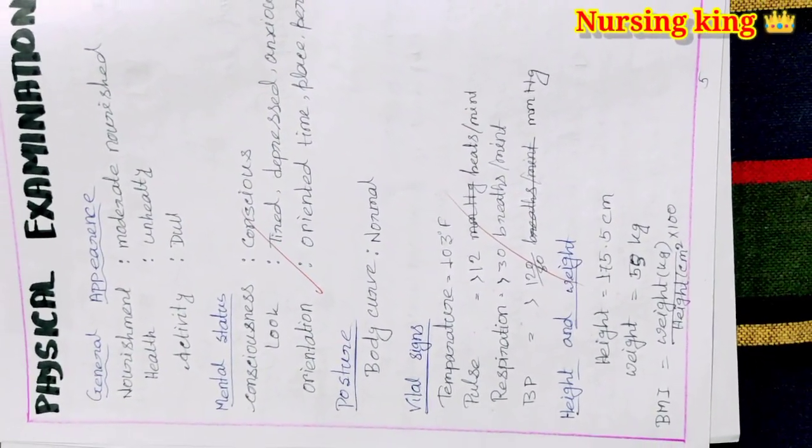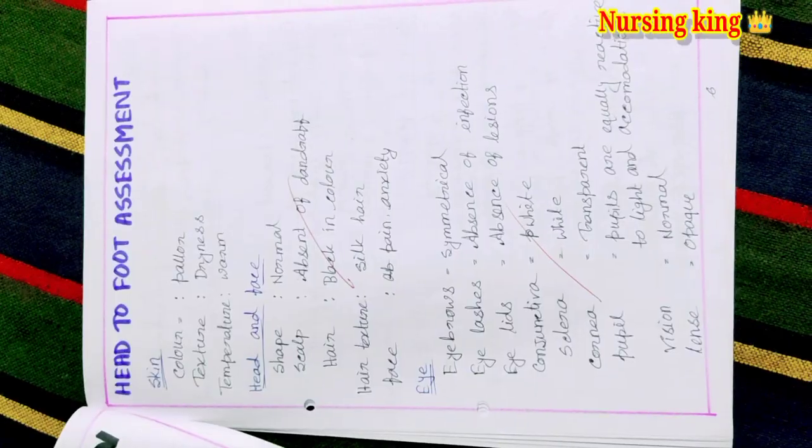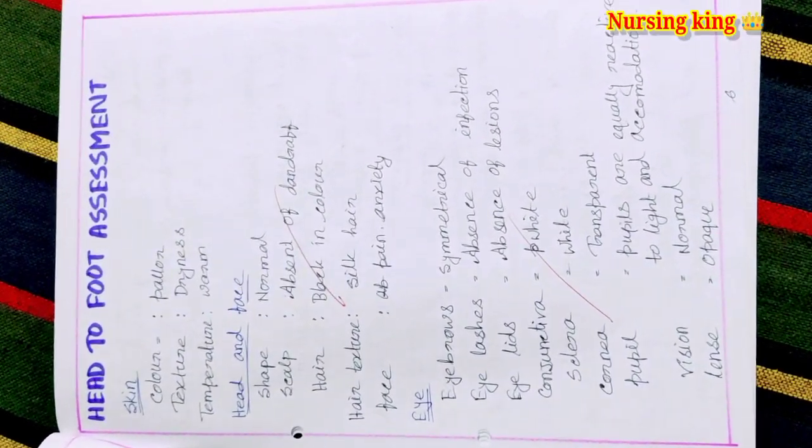After that, family history, then family tree, family composition you have to write. Then physical examination: general reference, mental status examination, vital signs, head to toe examination.